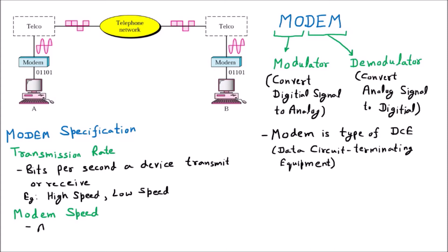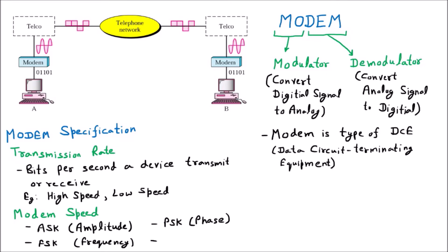If the modem modulates the amplitude, it is called ASK (Amplitude Shift Keying). If the modem works on FSK, it manipulates the frequency. If it works on PSK, it uses phase. If we consider both phase and amplitude, that is called QAM. So the speed of the modem depends on which technique it uses — ASK, FSK, PSK, or QAM — and depending on your requirement you purchase accordingly.